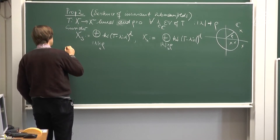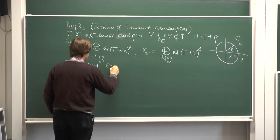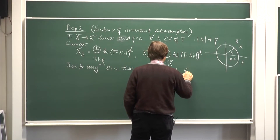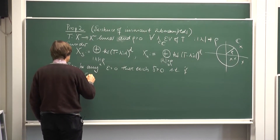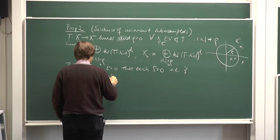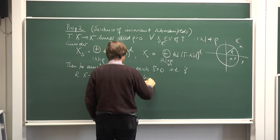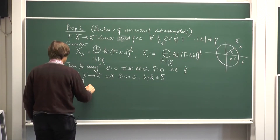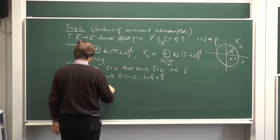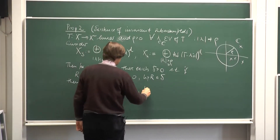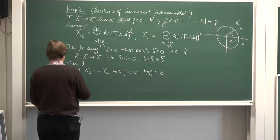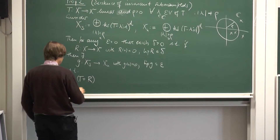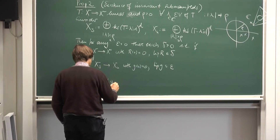The analytical part of the statement says: for any epsilon positive there exists delta positive such that if r is a perturbation — a map from X to X leaving the origin unchanged with Lipschitz constant less than delta — then there exists a map g from X_s into X_u which also leaves the origin fixed, has Lipschitz constant less than epsilon, such that the perturbed map T+r has as an invariant subspace the graph of g.